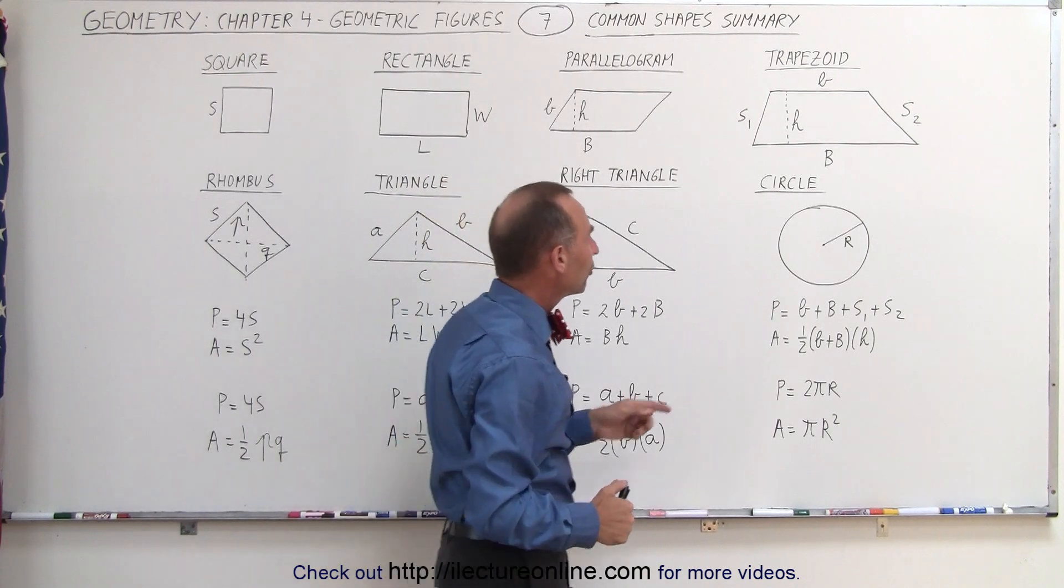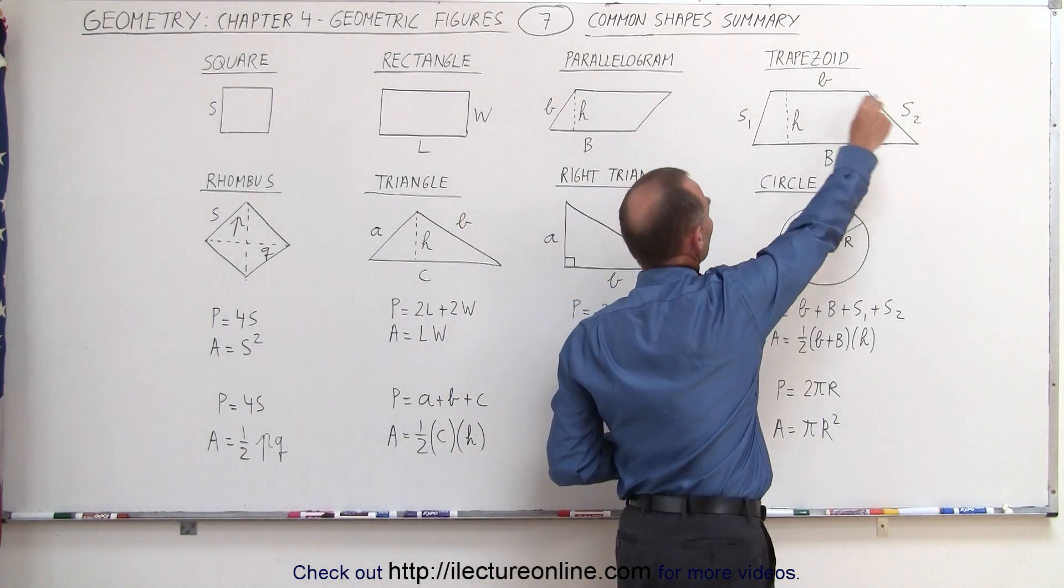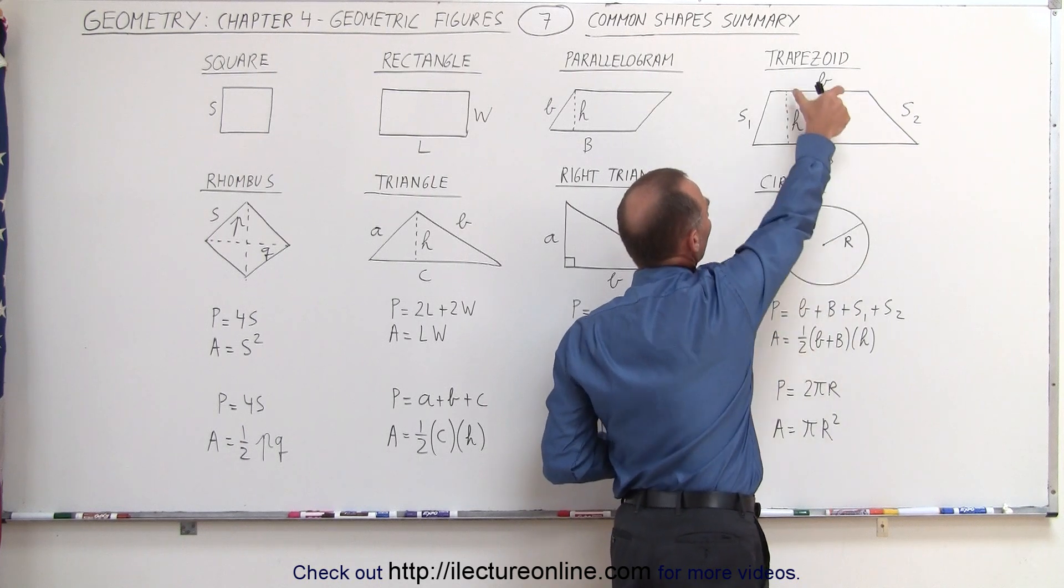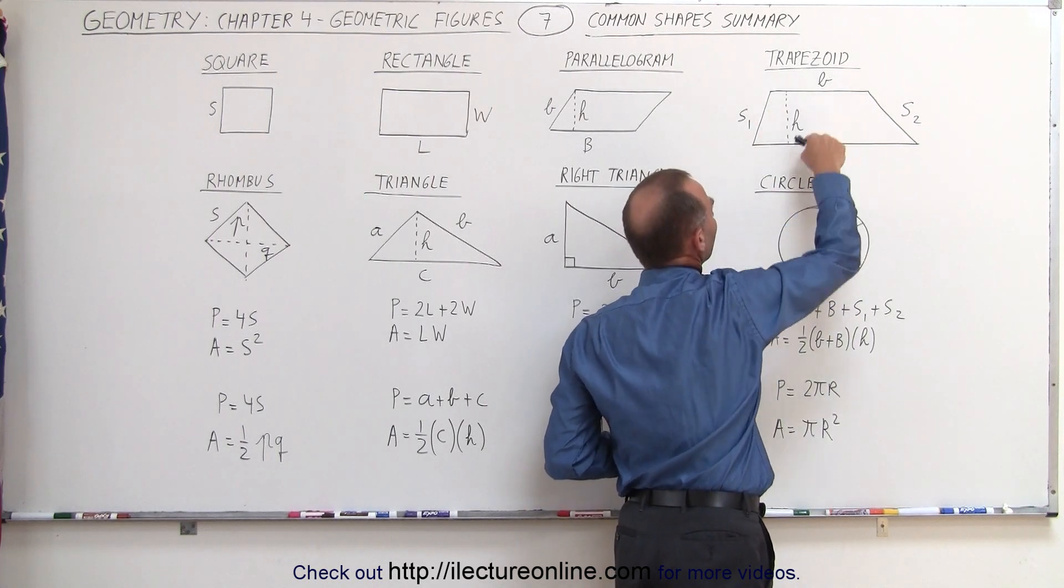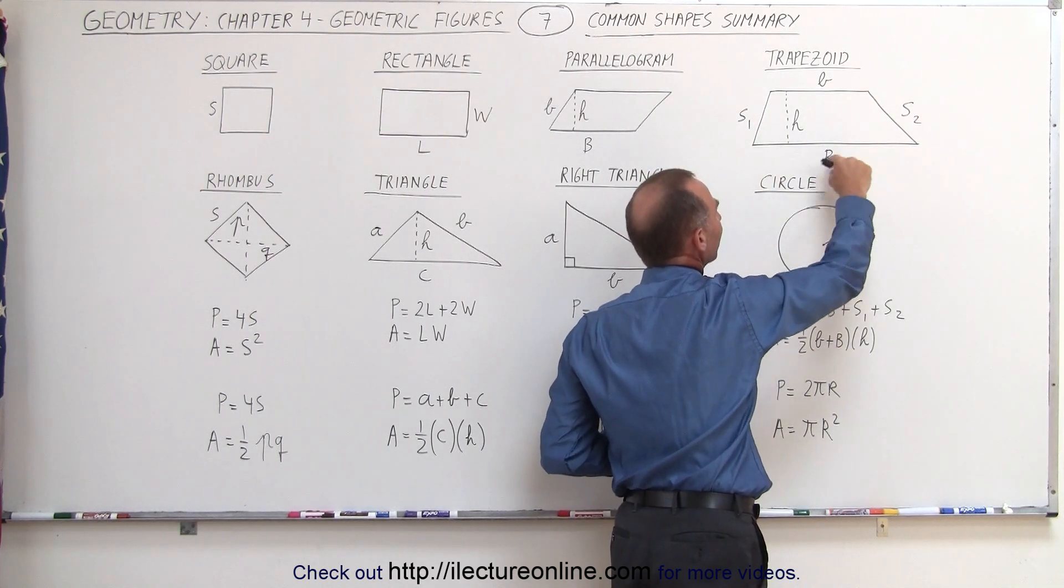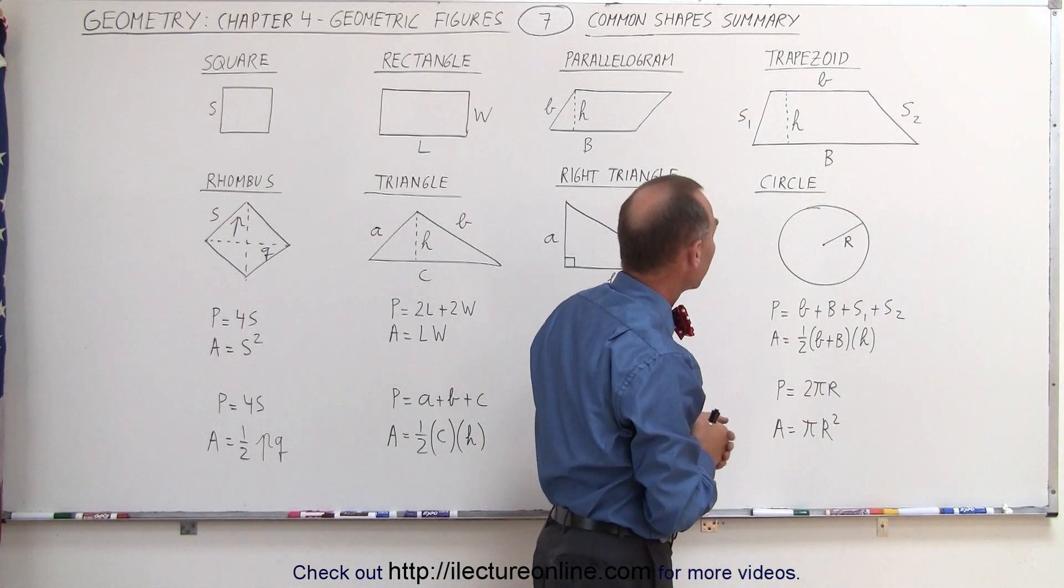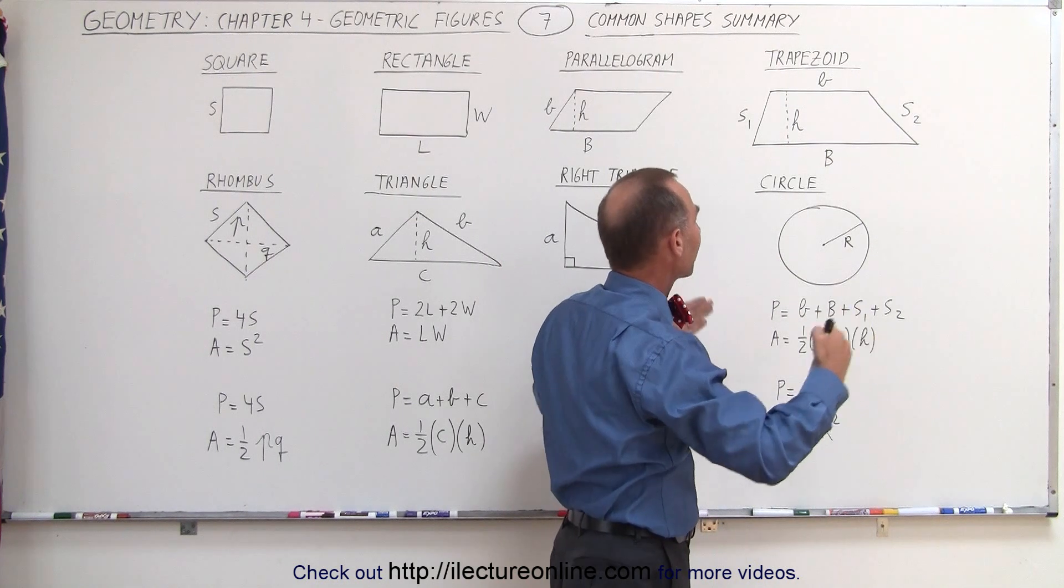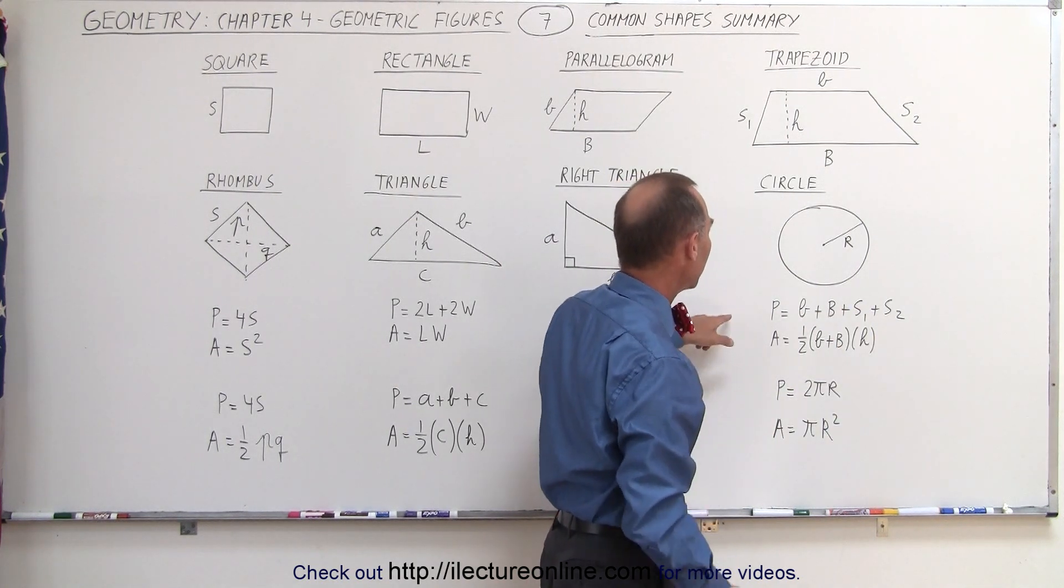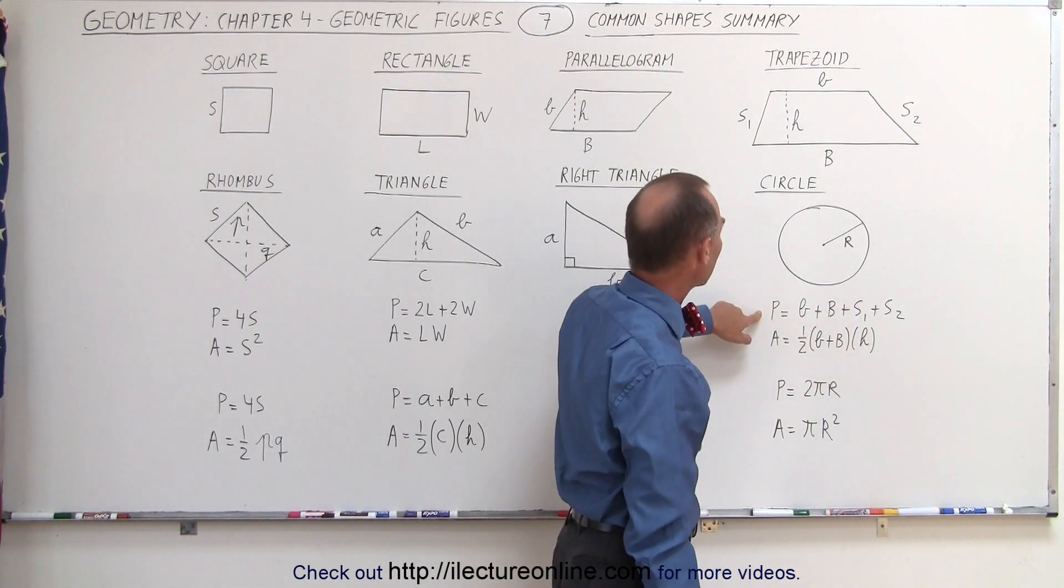For the trapezoid, the perimeter is simply the sum of the four sides. So it will be small b plus big B. Small b is used for the small side, big B is used for the big side where the sides are opposite and parallel to one another. S1 and S2 are the two sides that are not parallel to one another. So it's simply the sum of all four sides for the perimeter.